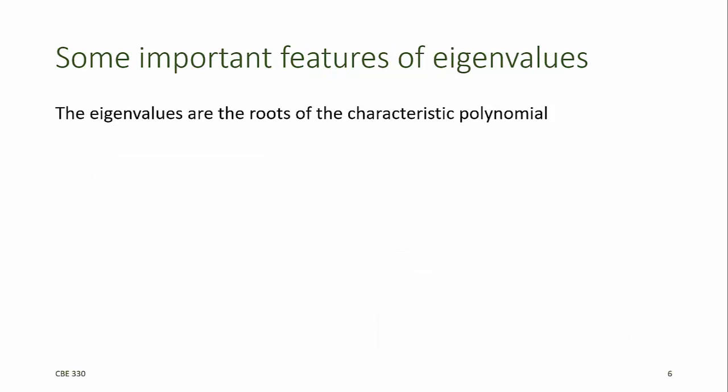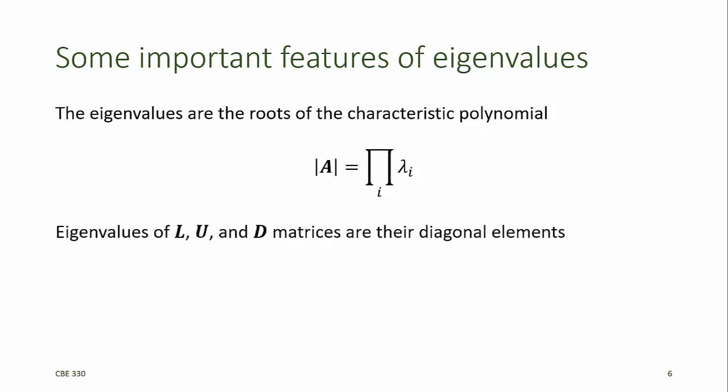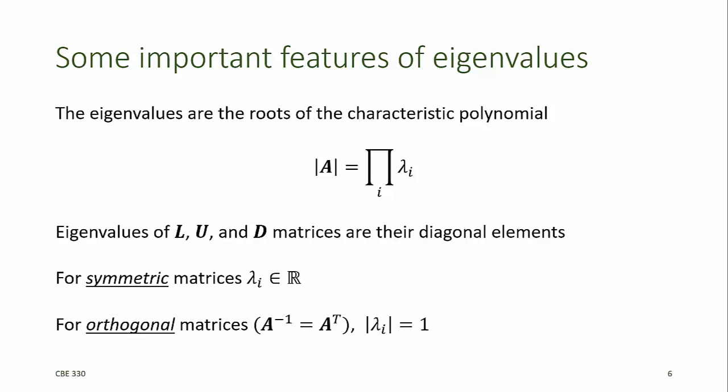These eigenvalues are the roots of the characteristic polynomial. The determinant of the square matrix A is always equal to the product of its eigenvalues. The eigenvalues of lower triangular, upper triangular, and diagonal matrices are always equal to their diagonal elements. And for a symmetric matrix, the eigenvalues are always real numbers. For matrices that we call orthogonal — that is, matrices for which the inverse is equal to the transpose — the absolute value of all of the eigenvalues is 1.